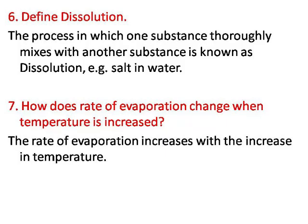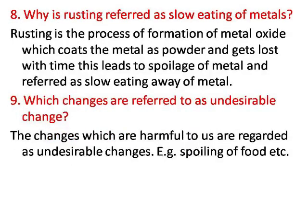Number eight: why is rusting referred to as the slow eating of metals? Rusting is a process in which metal oxide forms. Metal oxide is a powdery substance which gets deposited on the surface of the metal and gets lost over time, leading to spoiling and weakening of the metal. That is why it is referred to as the slow eating away of metal.